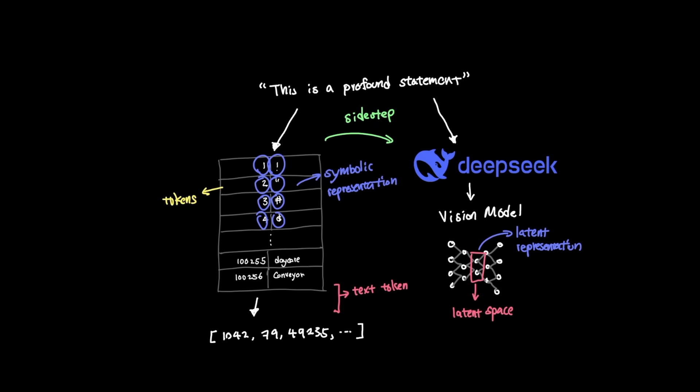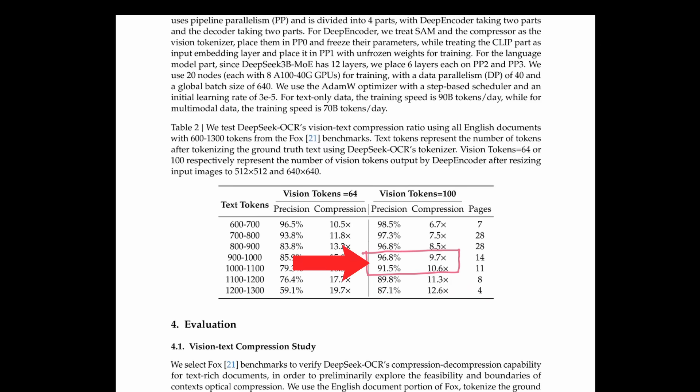And the result was quite astounding, where DeepSeek achieved 10 times compression while maintaining 97% accuracy and 20 time compression while maintaining 60% accuracy.